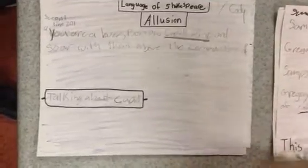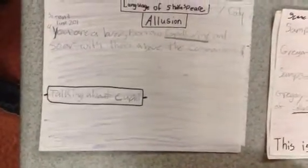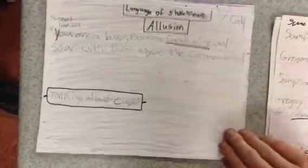Allusion. You are a lover, borrow Cupid's wings and soar with them above the common bound. And this talks about Cupid, part one scene by Romeo.